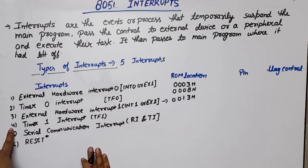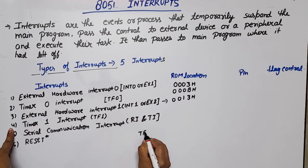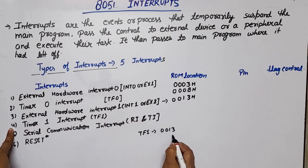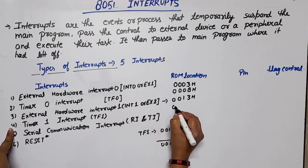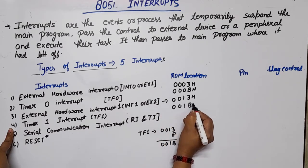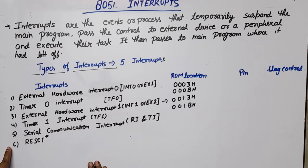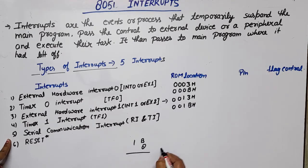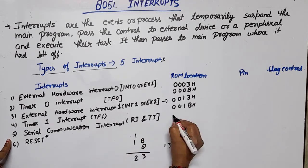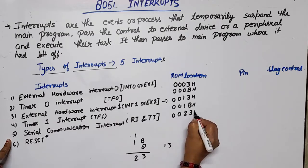For Timer 1 (TF1), the address is 001BH — calculated as 0013H plus 8: 3 plus 8 is 11, which is B in hex, giving 001BH. For the Serial Communication Interrupt, add 8 to that: B is 11, 11 plus 8 is 19, which is 13 in hex, giving address 0023H. So there is a difference of 8 locations between each interrupt vector address.